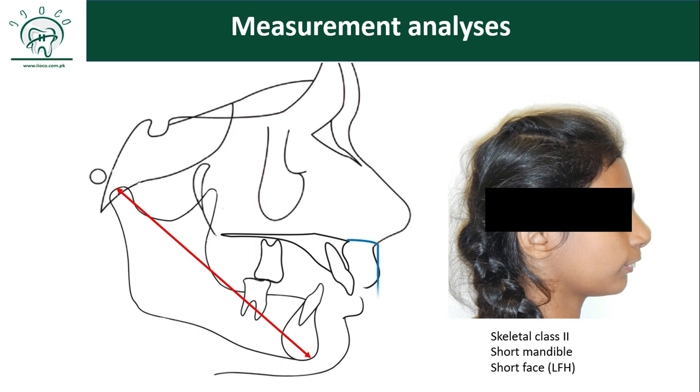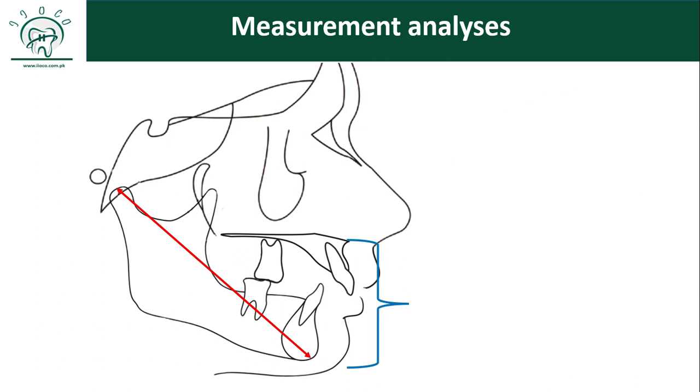Normally, the lower facial height is 55% of the total anterior facial height. But probably in this patient, you may find that her lower facial height is just 50% or even less. So this is the basic concept behind measurement analysis, in which you perform the measurements and compare the measurements with the norms.